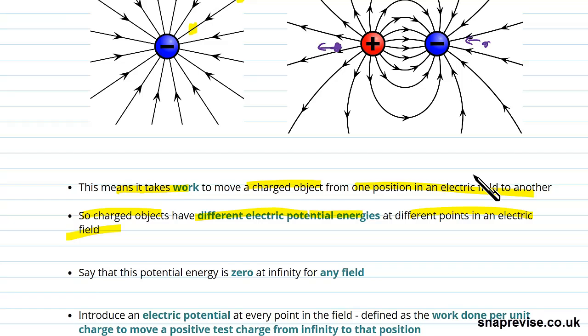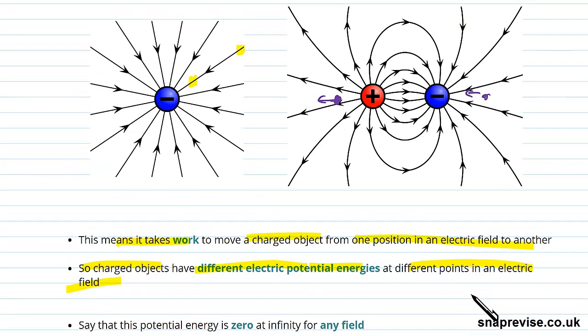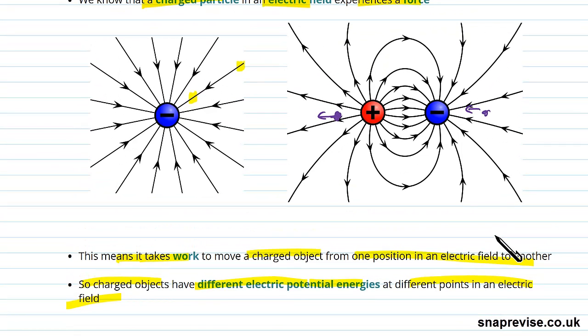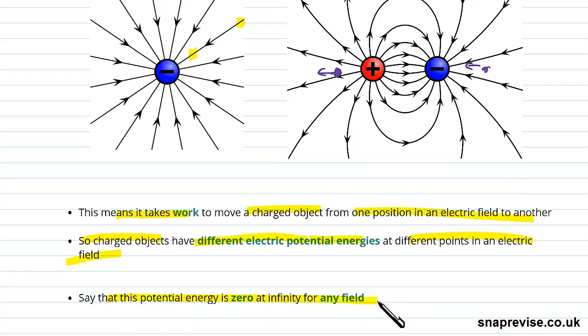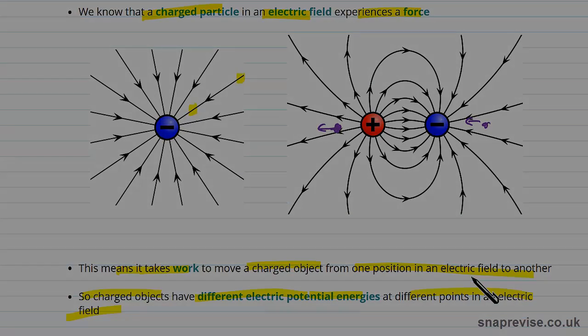And again, just as we did for a gravitational field, what we say is that basically every charge in an electric field has a potential energy associated with it. And what we say is, how do we find that? Well, we say that potential energy is zero at infinity for any field.